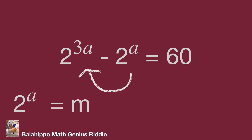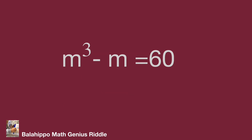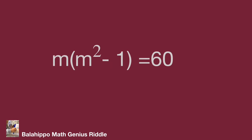So the equation changes to m cubed plus m equal to 60. Factorize the left side of the equation: m outside becomes m times the quantity m squared plus 1, equal to 60.